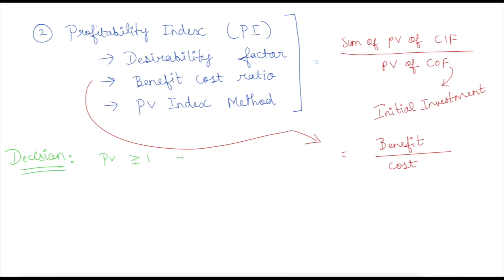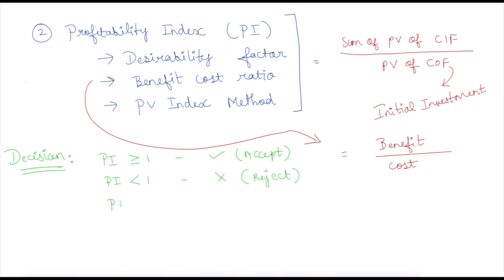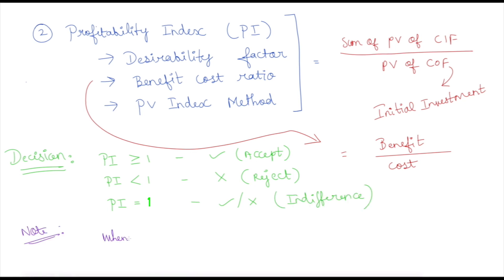Let us move on to the decision rule. As we saw in the previous method, here also there are three points to note. First: your profitability index should be greater than or equal to one in order to accept a project. If your profitability index is less than one, you are going to reject the project. If it is equal to one, your project is at an indifferent point.